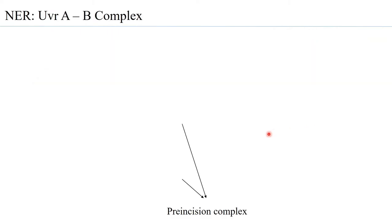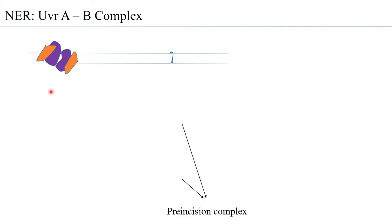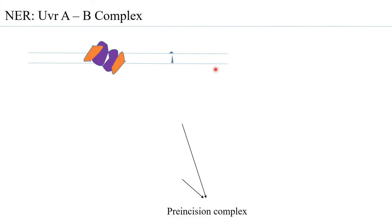The UVR-A–B complex effectively works as a pre-incision complex. The UVR-A2–UVR-B2 complex binds to the DNA at normal regions and scans the DNA for damages, since UVR-A can close into normal DNA and the DNA can pass through the cleft. When it reaches the damage, the UVR-B2 molecules come close to each other due to a conformational change.